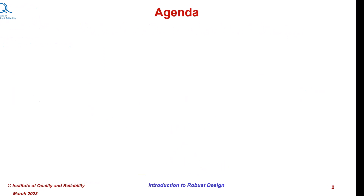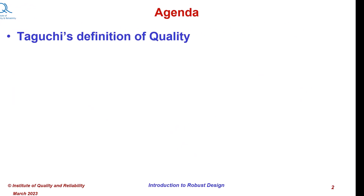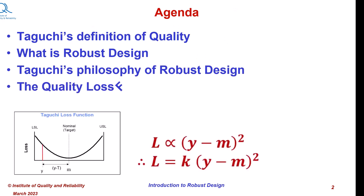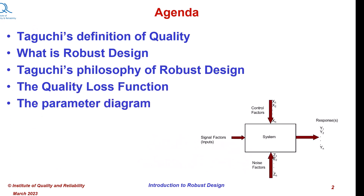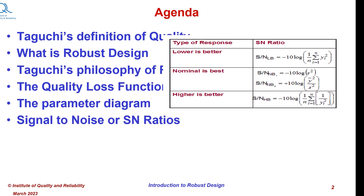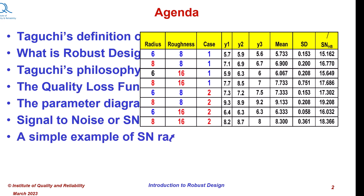In this video, we will explain Taguchi's definition of quality and what is robust design. We will also explain Taguchi's philosophy of robust design and quality loss function as defined by Dr. Taguchi. We will understand the concept of parameter diagram and various types of factors, the signal-to-noise or SN ratios as defined by Dr. Taguchi, and a simple example of SN ratio calculation.